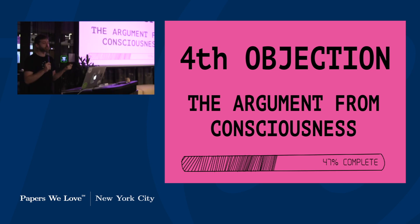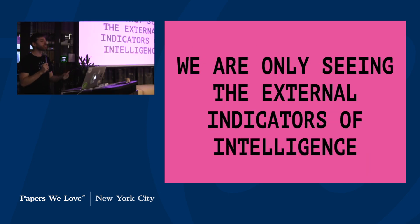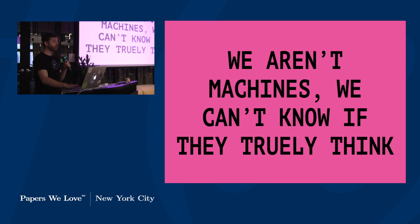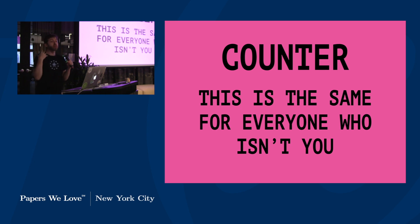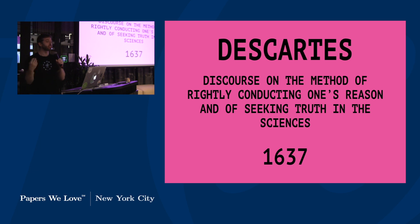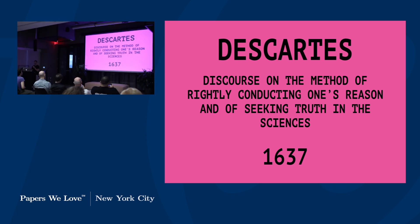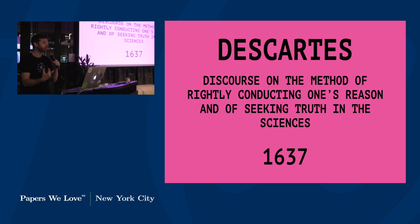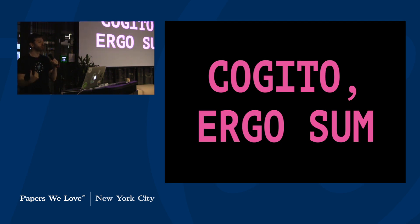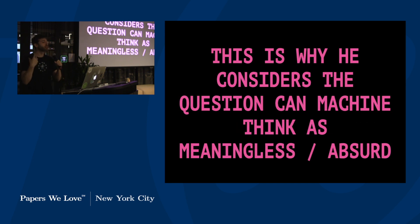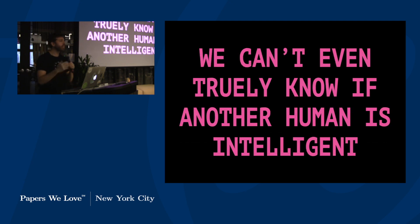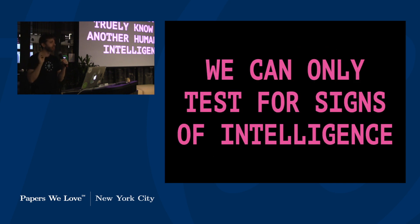The fourth objection is the argument from consciousness: that we are only seeing the external indicators of intelligence through the imitation game, through how the machine is responding — we aren't machines, so we can't truly know what they think. Turing counters that this is the same for everyone who isn't you, including the person sitting next to you. You don't know if I'm intelligent — I could be controlled by an angel pulling my strings, much like what Descartes says in his Discourse on the Method from 1637. This circles back to why Turing considers 'can a machine think?' meaningless — we can't even know if the person next to us is intelligent, let alone a machine.